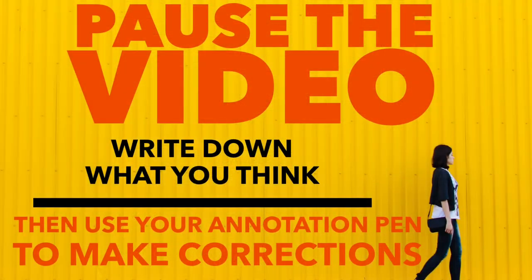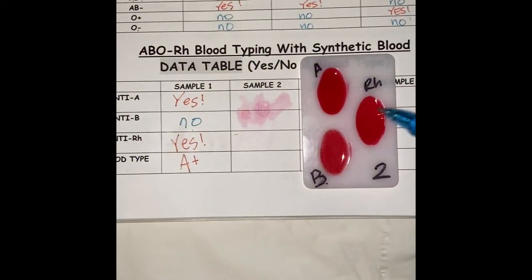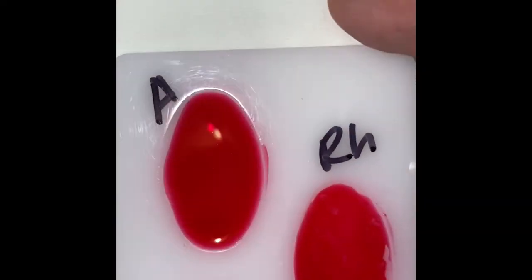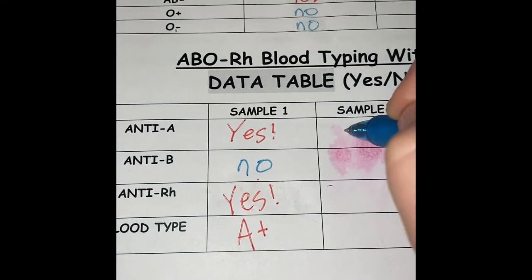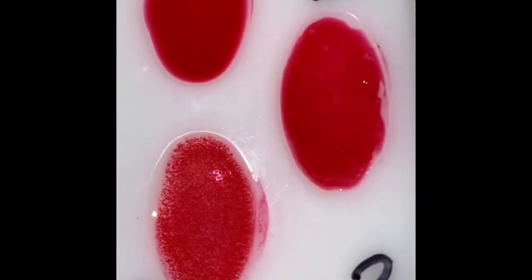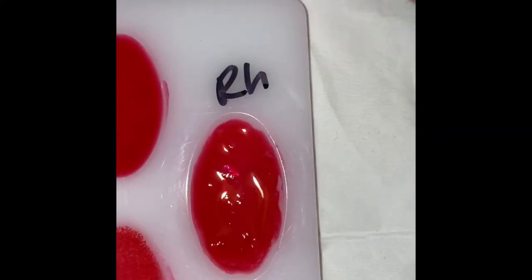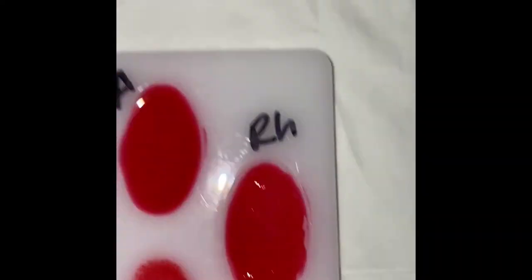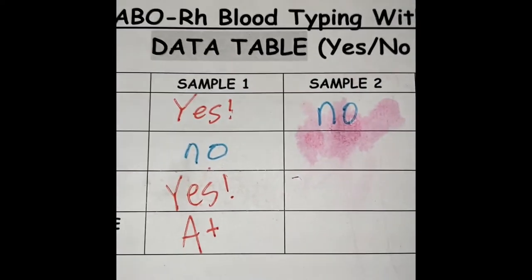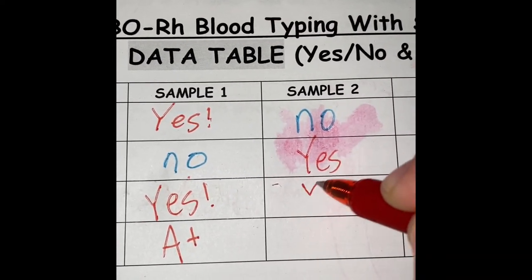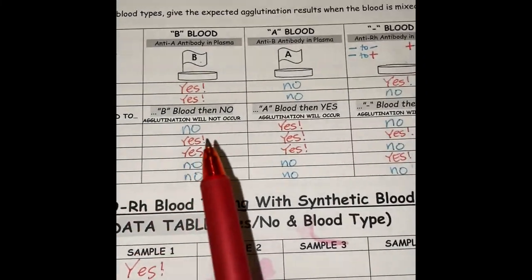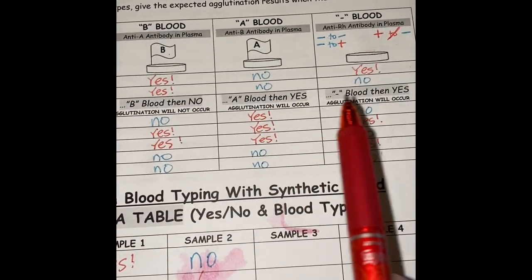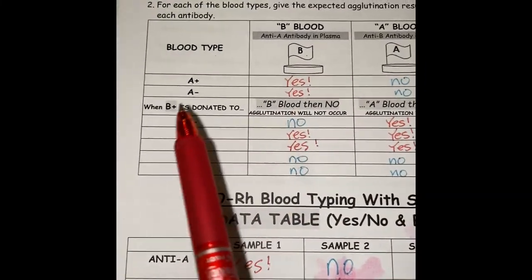Pause the video and try to fill in the other charts. Now sample tray two: the A well — no agglutination. The B well — oh yeah, agglutination. And the RH looks a little clumpy, so yes for B agglutination and yes for RH. So which one is that? B positive.